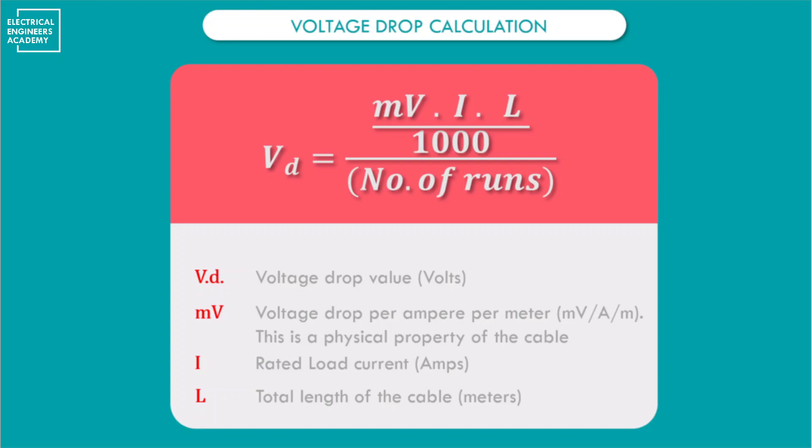One of my followers attracted my attention to an important point and confusion which is usually happening with many engineers regarding the number of runs to be used in the voltage drop calculation formula. So what is this tip and how to ensure that you don't fall into this misunderstanding while calculating the voltage drop value?